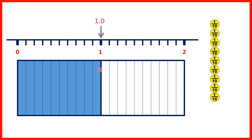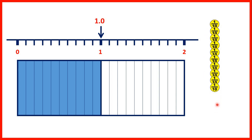9 tenths is 0.9, and if we count on another tenth, we have 10 tenths, but that's the same as having one whole. So we have 1 or 1.0. Remember, the number before the decimal point tells us how many wholes we have, and we now have one whole rectangle, and the digit after the decimal point tells us how many tenths we have, and we don't have any extra tenths. We can also show using place value counters that if we have 10 tenths, we can exchange those 10 tenths for one whole.